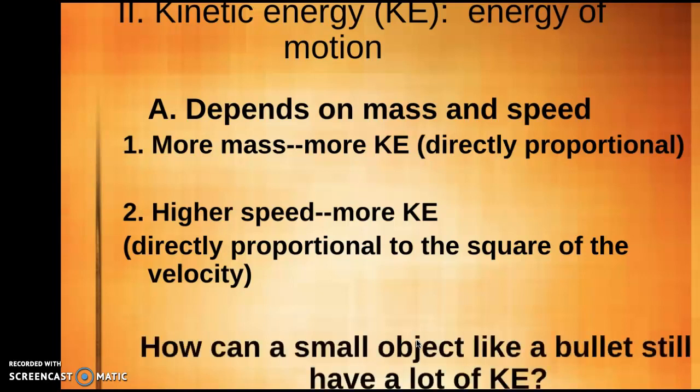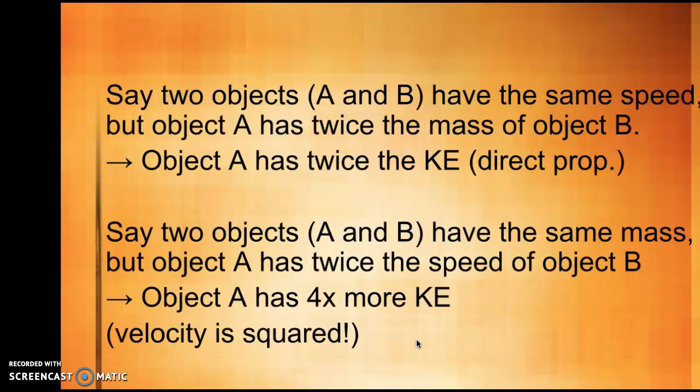It's a big determiner of the kinetic energy of the object. So sometimes you might have a question like, how can a tiny object, like a little bullet, still have a lot of kinetic energy? It's possible because even though the mass is really small, like a very small fraction of a kilogram, because they typically travel so fast, velocity is squared in the equation. And so it's going to have actually a pretty decent kinetic energy.